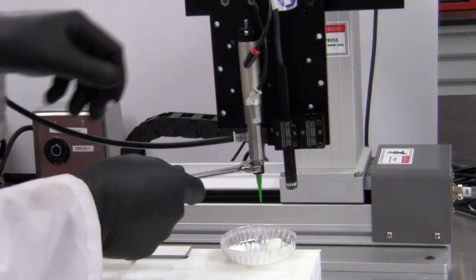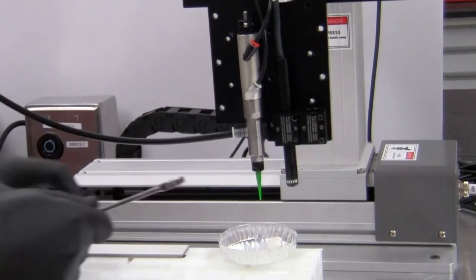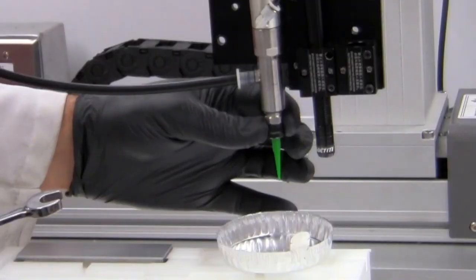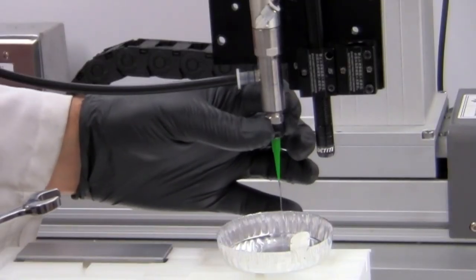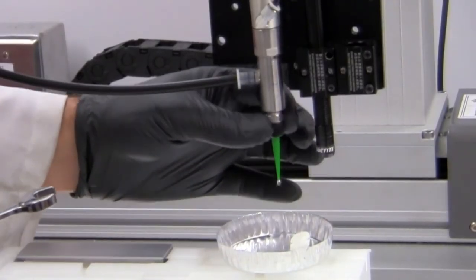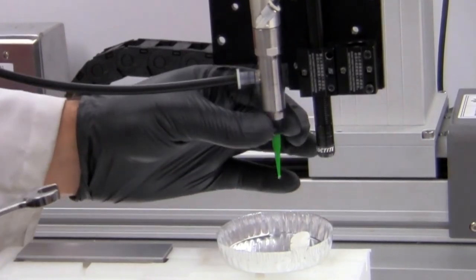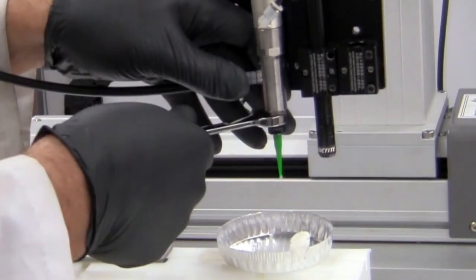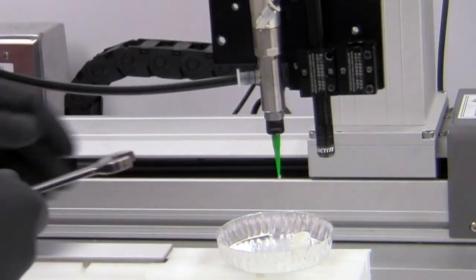To prime this valve you simply use a wrench to loosen the check valve then adjust a few turns until you start to see adhesive flow through the needle. Once the adhesive is flowing and there are no air bubbles, tighten the check valve by hand and finish by tightening it with a wrench and your valve is now primed.